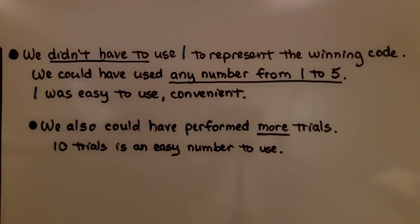We didn't have to use 1 to represent the winning code. We could have used any number from 1 through 5. 1 was easy to use. It was convenient. We also could have performed more trials. 10 trials is an easy number to use. I was very quickly able to put it into a decimal or a percentage.